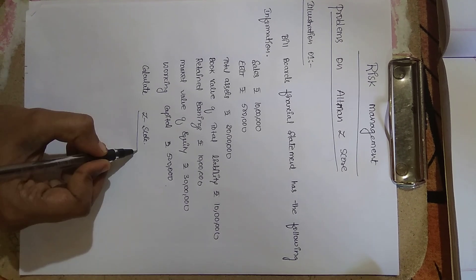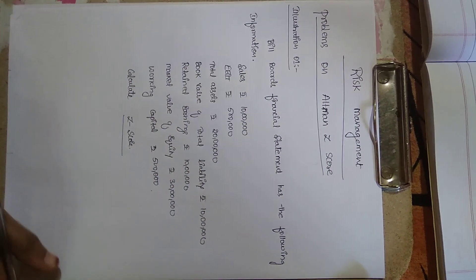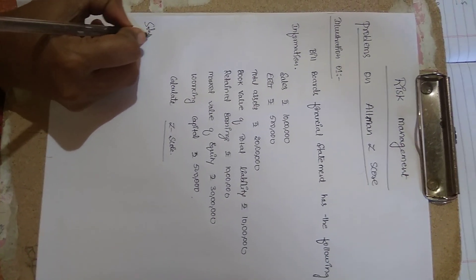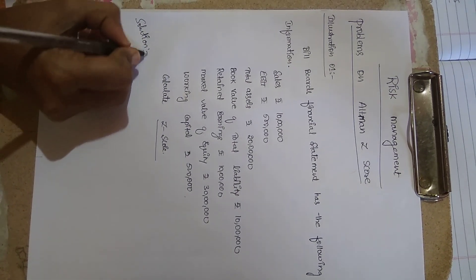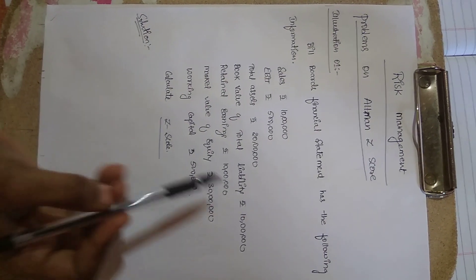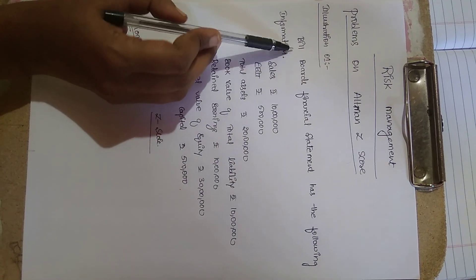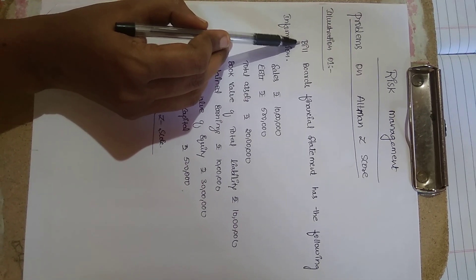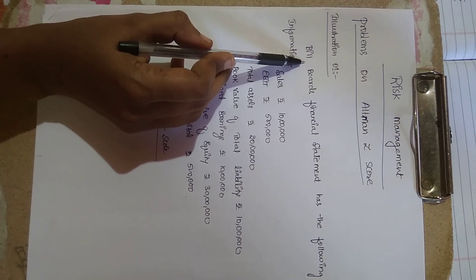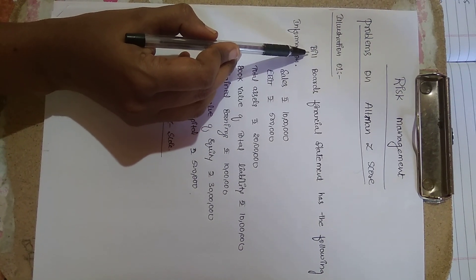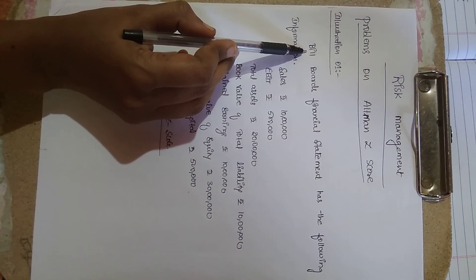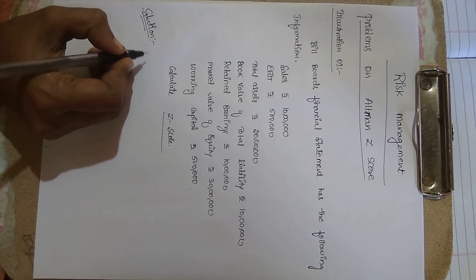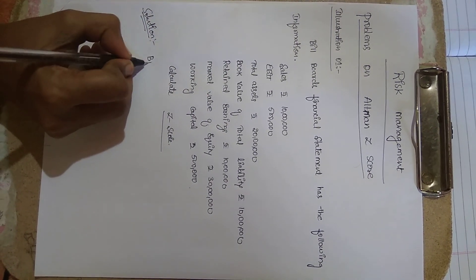We have to calculate the Z-score for Billboards Finance. For the solution, we need to identify whether this company is a public company, private company, or non-manufacturing concern. In the given question they have not mentioned the kind of company, so we are assuming that Billboards company is a public company.